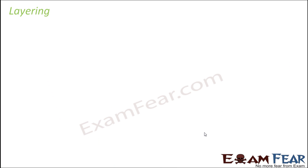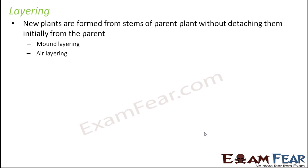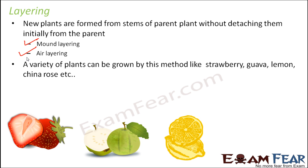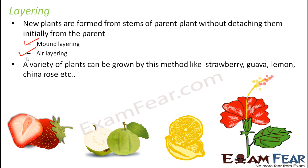Another technique of asexual reproduction is layering, where new plants are formed from stems of the parent plant without detaching them initially from the parent. Unlike cutting, where we separate a stem from the original plant, in layering the stems are not detached initially. There are two types: mound layering and air layering. Plants commonly grown by this method include strawberry, guava, lemon, china rose.